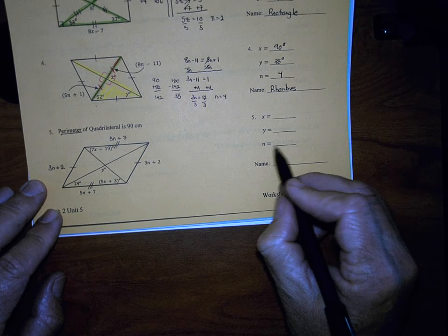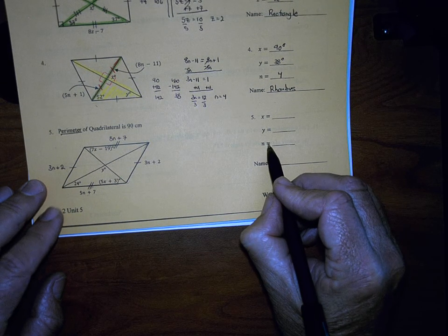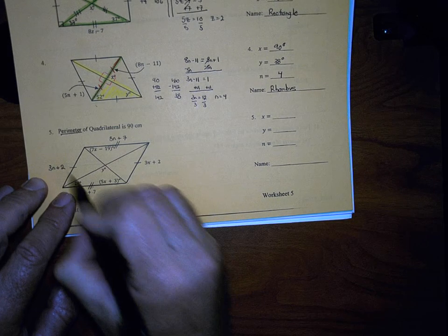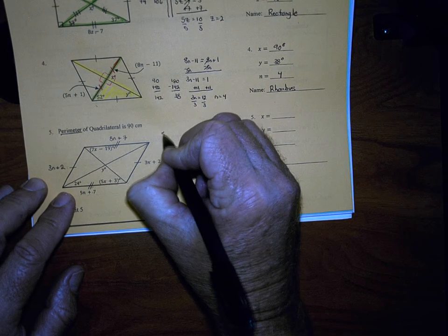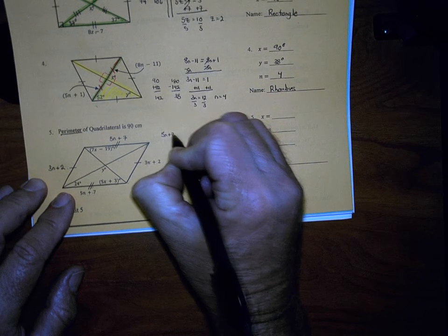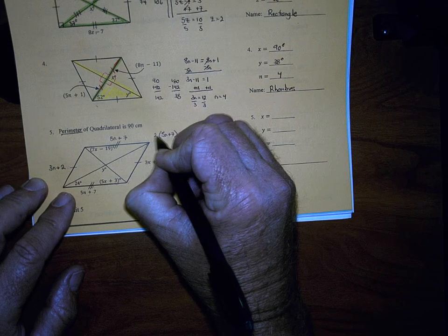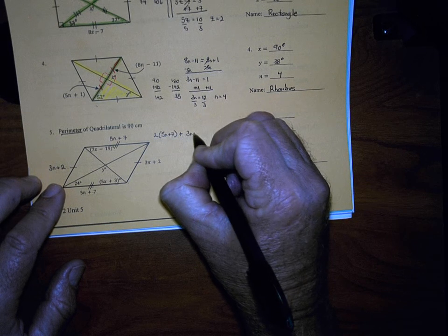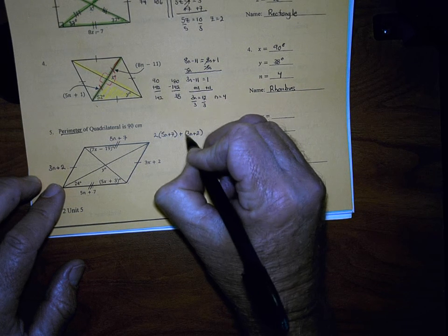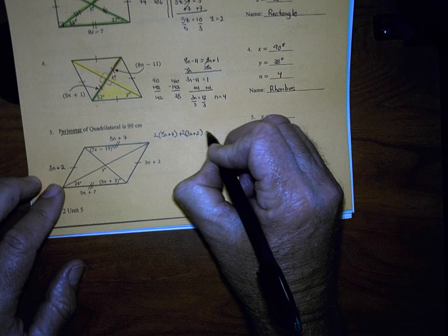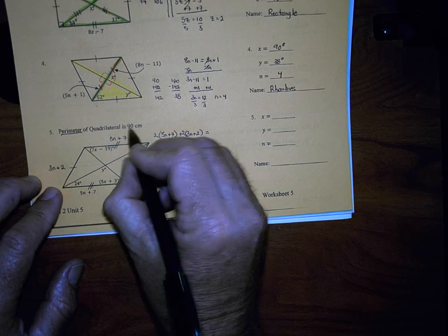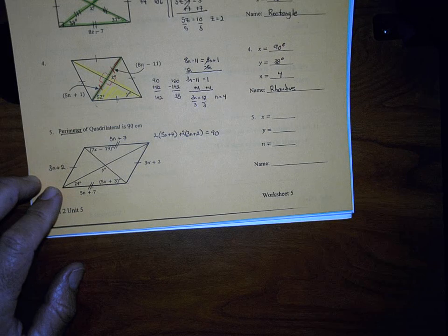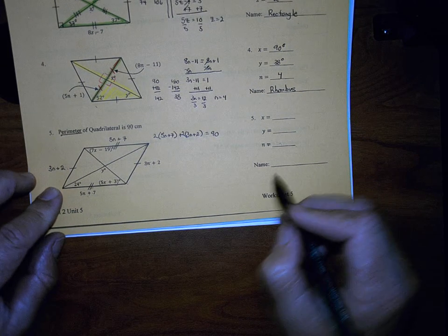What we would do to find the value of N would be, we would add up all four of these sides. So we would take 5N plus 7, and we have two of those. We would add it to 3N plus 2, and we have two of those as well. And that would give me my perimeter, which would make this equal to 90. That's the equation that you would use to find the value of N.